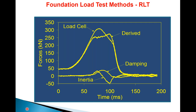Looking at it in the time domain, the smooth larger curve is the force measured by the load cell. You can see the typical relative magnitude of the inertia and damping forces. By subtracting the inertia and damping forces from the measured force using F = ma + cv + ku, we can isolate the stiffness term ku.